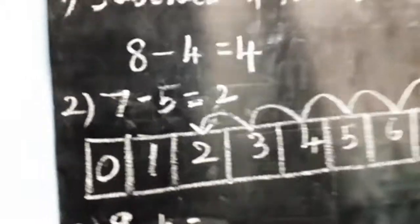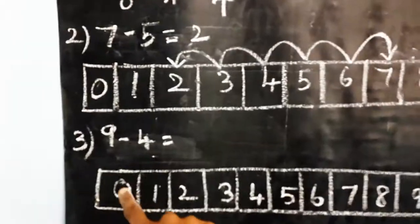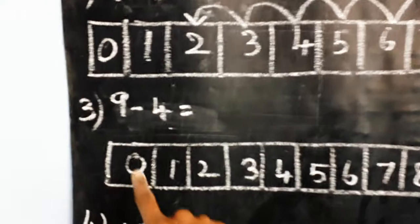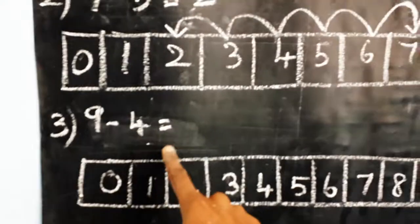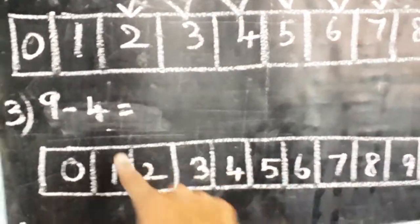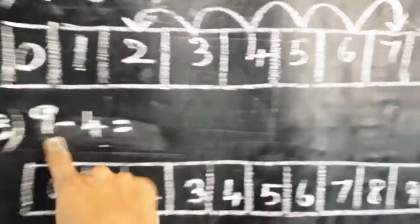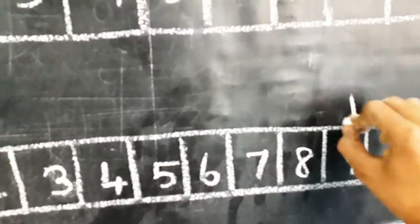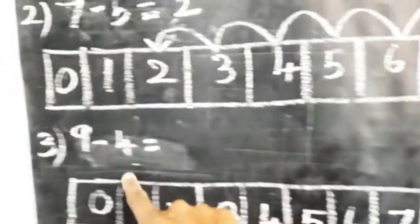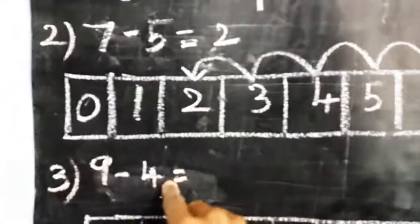Now look at the third sum. Nine minus four is equal to dash. You are starting from which number, guys? Yes, nine. So we are starting from number nine. Go backward of how many numbers? Yes, four.